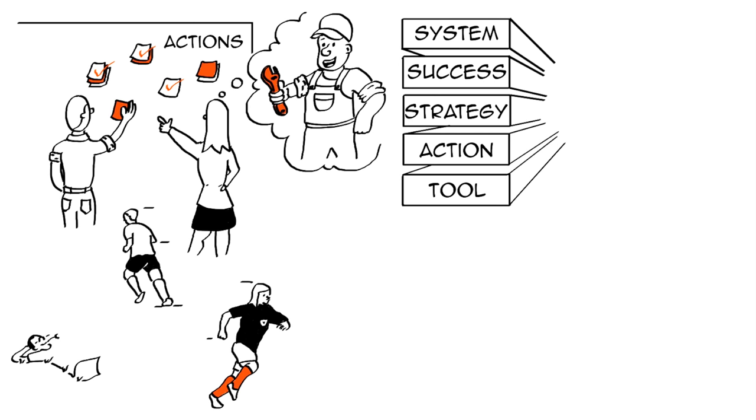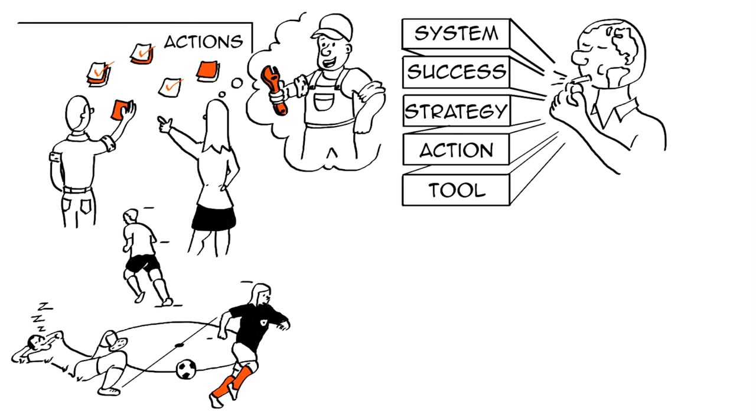In order to become sustainable as a society, we need to know the rules of the game on planet Earth, we need to make sure that we work together strategically, that we choose the tools and action that are right for us to achieve success in our system.